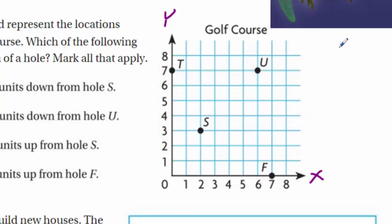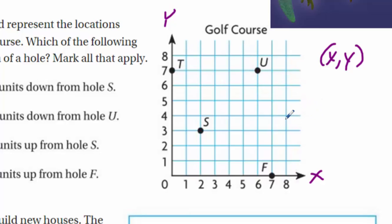Whenever we do coordinate pairs, remember they are always listed as X, Y. X comes before Y in the alphabet — that's not really why they named them that, they just named them that way. But X comes before Y, so there you go. Makes it simple.